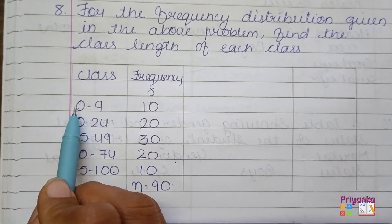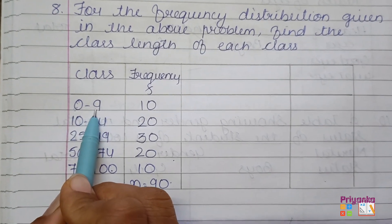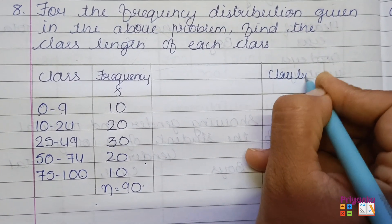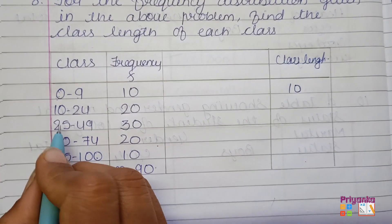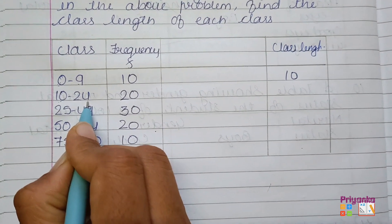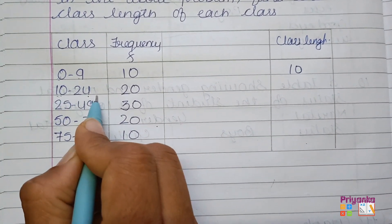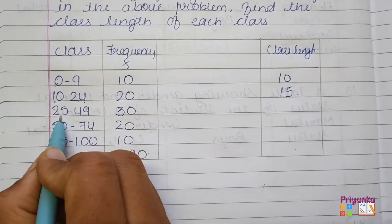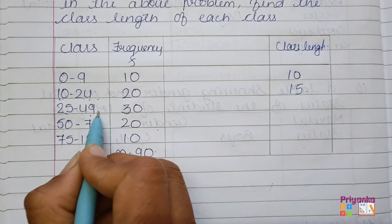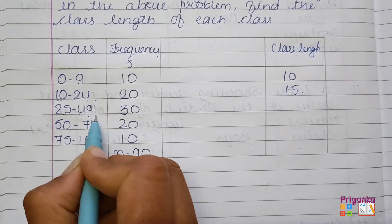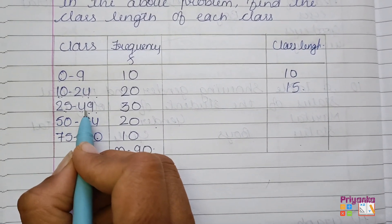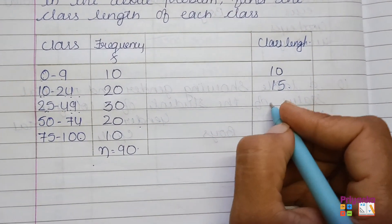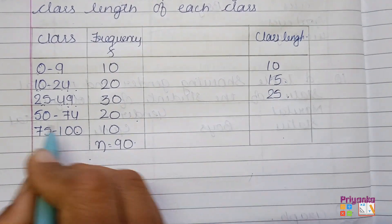If we count 0 included till 9, we will get a class length of 10. Then, if we include 10 till 24, we get 15. For 25 to 49, it may be difficult to count 49 directly, so you can approximate it as 50. The difference between 25 and 50 will be 25. This is how you can make a quick decision.